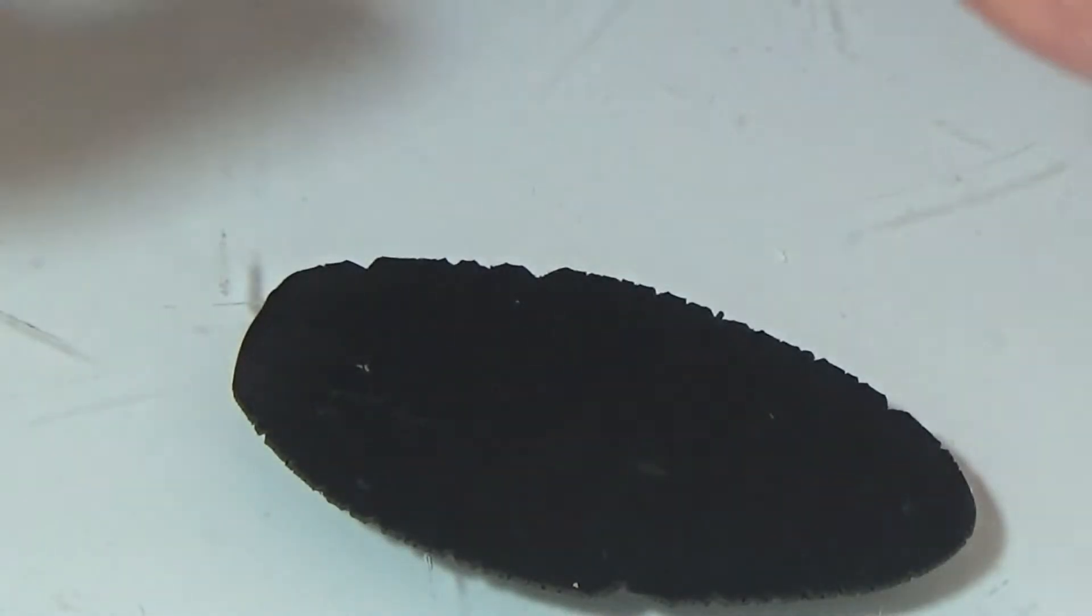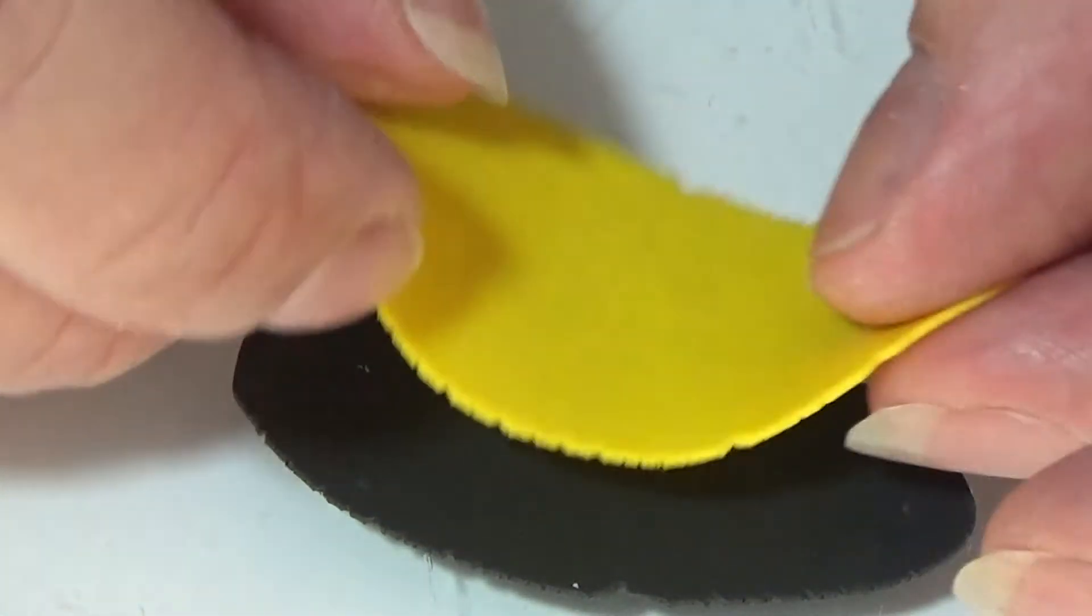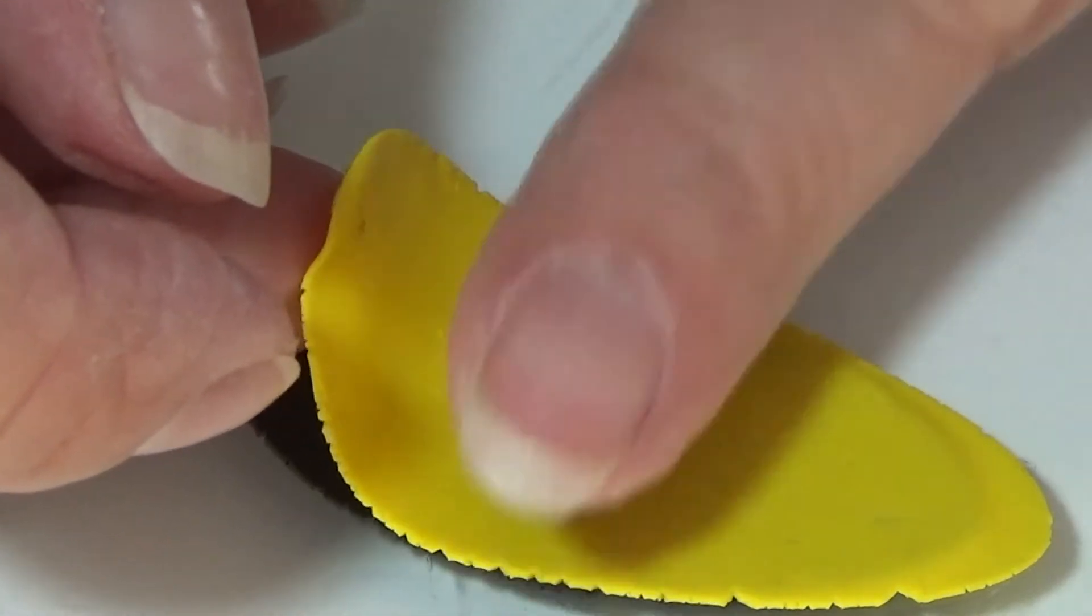I have some black clay rolled out on a setting 9 on the pasta machine and a yellow piece of clay also rolled out on a setting 9 with the pasta machine.